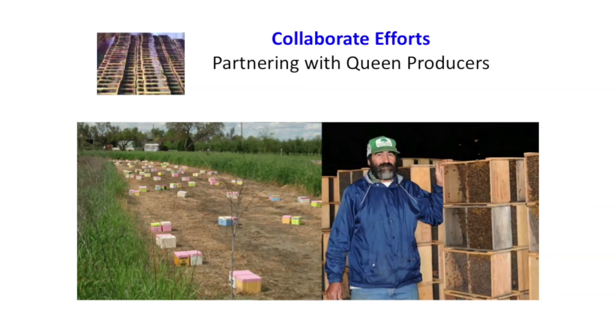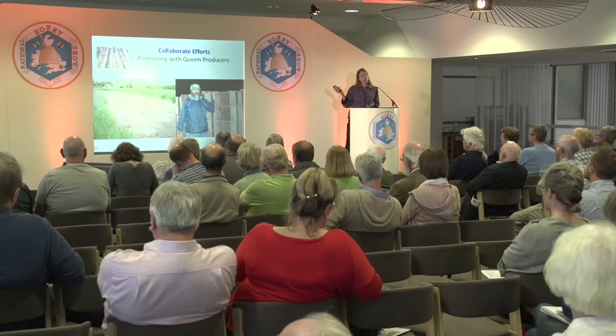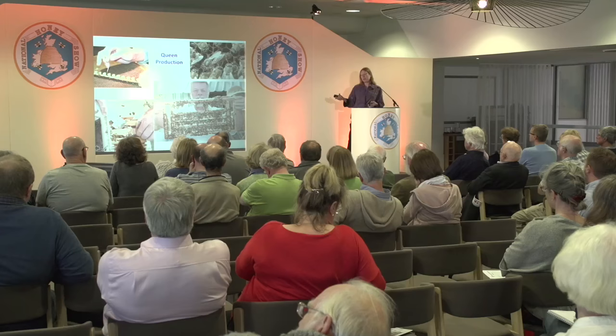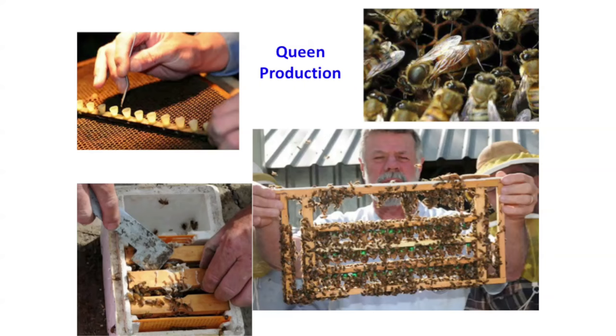We partner very closely with the California queen producers. They have the capability of mass producing queens — they're all very good businessmen, and I charge them a lot of money for these queens. If they're not happy, I learn very quickly about that. They do major queen production in California, supplying honey producers and pollinators. They're also supplying package bees for the huge growth of hobby beekeepers in the country since the publicity around colony collapse disorder. You want to give them a gentle bee, a fun bee to work with. I like the production strategy of Carniolans — they seem more in tune to the environment, shut down when resources are not good, build up really fast in spring, and winter well. I have a real bias toward that particular bee.